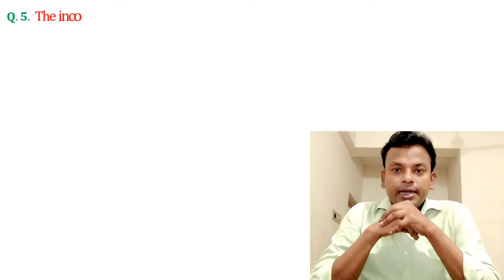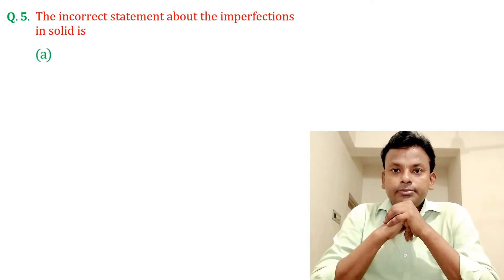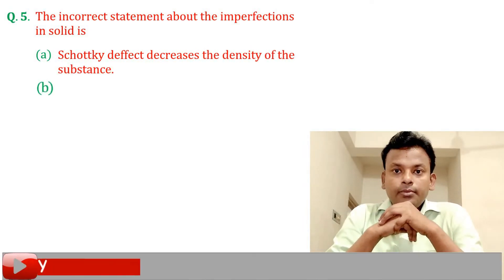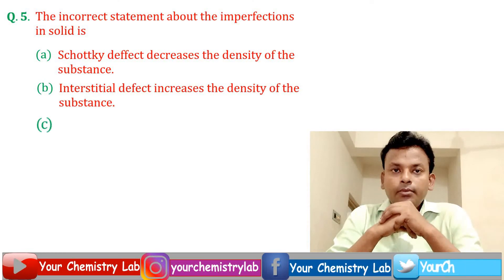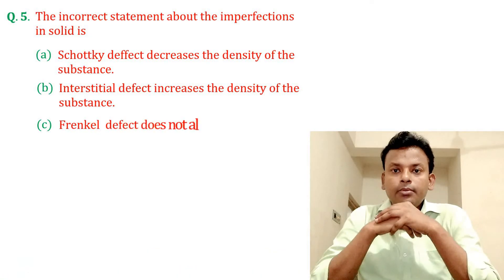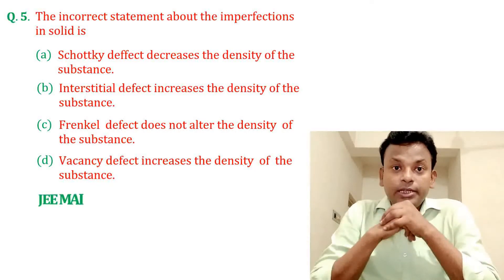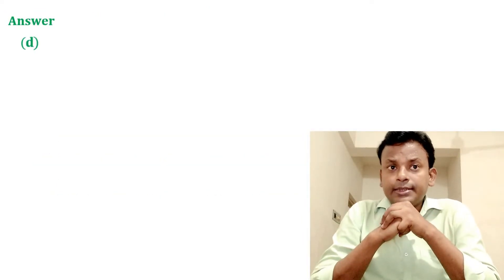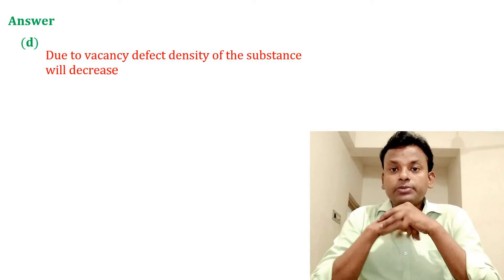Question 5. The incorrect statement about imperfection in solids is option A, option B, option C, or option D. This question was set in JEE Main 28th June 2022 morning shift. Answer: Option D is the correct answer. Due to the vacancy defect, the density of the substance will decrease. So option D is the correct answer.